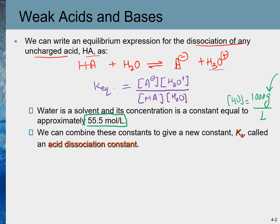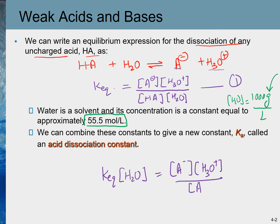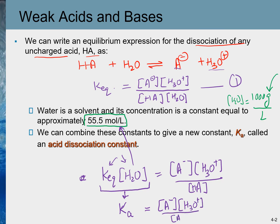If we multiply the equilibrium constant by the concentration of water, we incorporate the water concentration into the constant. The product of Keq times the concentration of water — remember concentration of water is 55.5 — both of these are constants, so this equals a new constant. This new constant is known as the acid dissociation constant and is denoted by Ka.